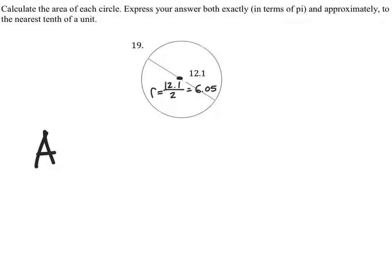So the area equals pi times the radius times the radius. We just found that the radius in both will be 6.05.